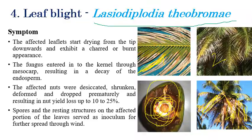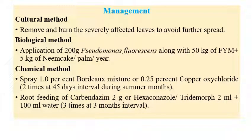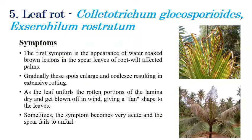Management of Leaf Blight includes three approaches. Culturally, severely infected leaves should be collected and burnt. Biologically, 200 grams of Pseudomonas fluorescens — a bacterial biocontrol agent — along with 50 kg of farmyard manure and 5 kg of neem cake per palm per year can be applied. Chemically, spray one percent Bordeaux mixture or 0.25 percent copper oxychloride twice at 45-day intervals during summer, and root feeding with Carbendazim 2 g, Hexaconazole, or Tridemorph 2 ml in 100 liters of water at three-month intervals is recommended.